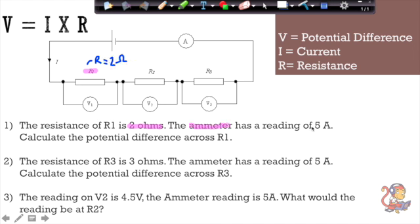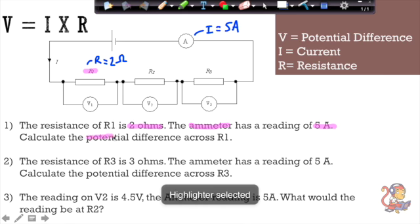The ammeter has a reading of 5 amps. So I also know that current equals 5 amps. And because it's a series circuit, current is the same everywhere in the circuit. Finally, I need to calculate the potential difference across R1.